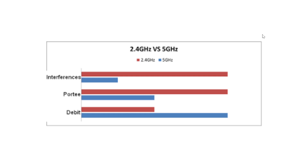2.4 gigahertz also gives you a bigger range than 5 gigahertz. 5 gigahertz does not propagate as far. In general, the higher in frequency you go, the less distance you can cover with Wi-Fi.